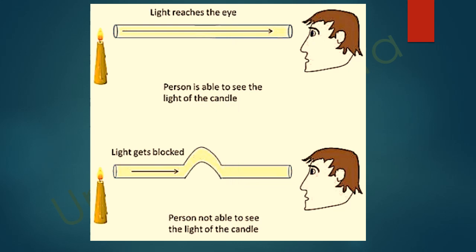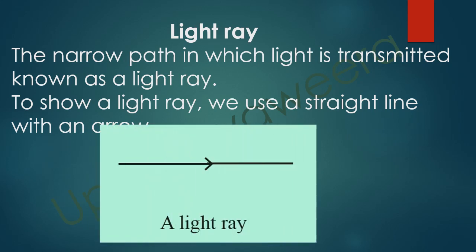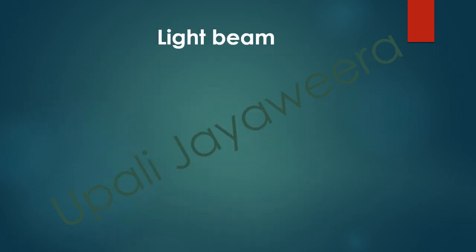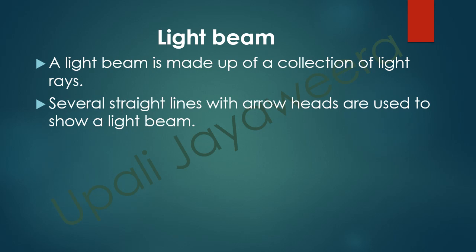You can also do this activity: get a rubber tube and fix a lighted candle. Observe through the rubber tube when it is straight — you can see the flame. Then bend the rubber tube and observe — you will not be able to see the flame. The narrow path in which light is transmitted is known as a light ray; we show it using a straight line with an arrow. A light beam is made up of a collection of light rays, shown by several straight lines with arrowheads.